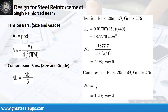Given ρ equals 0.01707, b equals 250 mm, and d equals 440 mm, the area of steel for tension bars is 1877.7 square millimeters, and the number of bars for 20 mm bar is 6. The number of compression bars is 2.